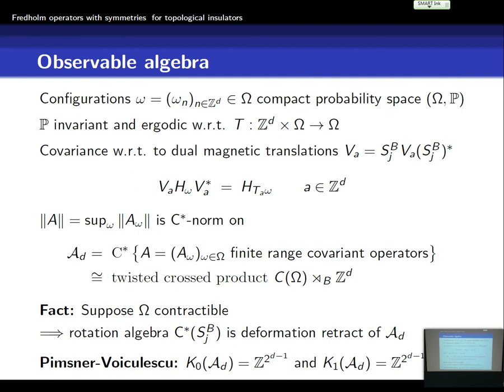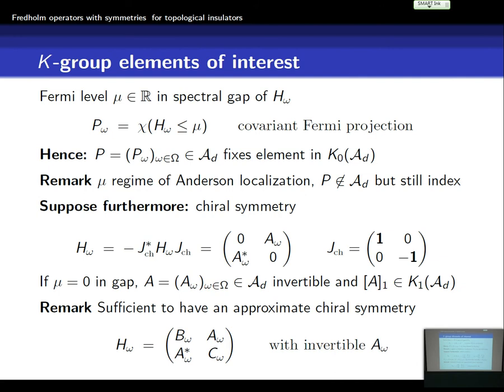I want to do index theory for these invariants coming into these groups. Let me point out what the K-theory elements are that we are interested in from a physics point of view. These are fermions, so it's very natural to look at the Fermi projection. If the system at the Fermi level has a gap, the Fermi projection is actually an element of the algebra — a covariant family of projections defining a K0 class in the algebra. We can then prove index theorems for this. These index theorems can later be extended to elements where the Fermi level only lies in a region of dynamical localization.